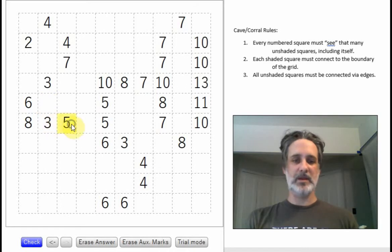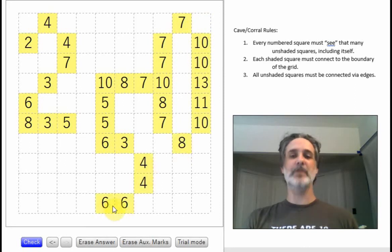So I'm going to go with yellow or unshaded here. So I'm going to go ahead and shade in all of my numbers, or I guess unshade all of my numbers already because we know that every number is unshaded.